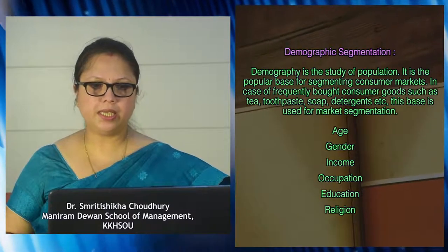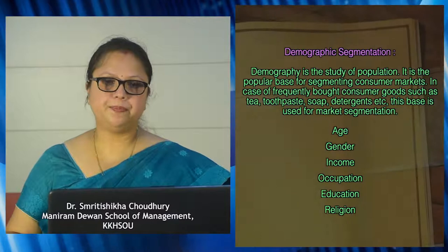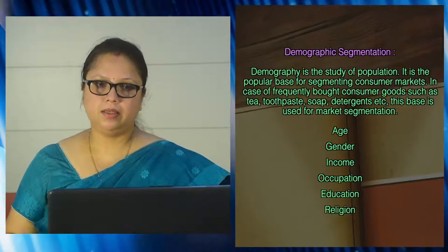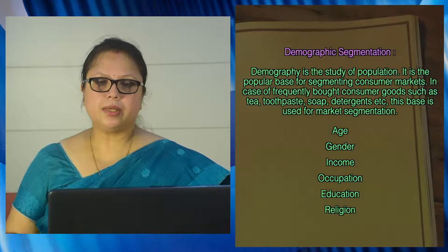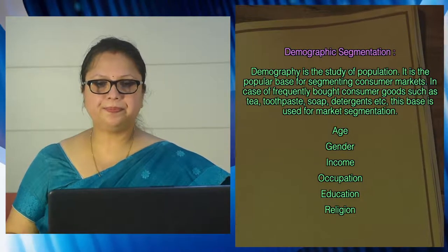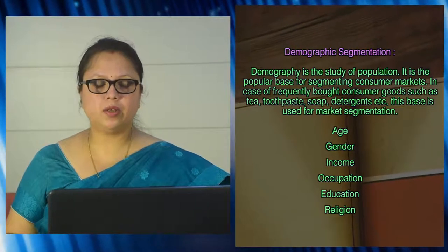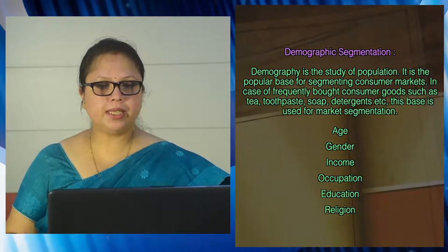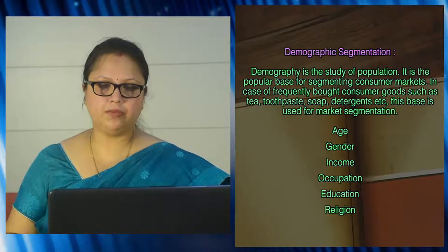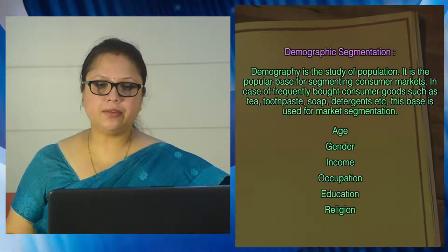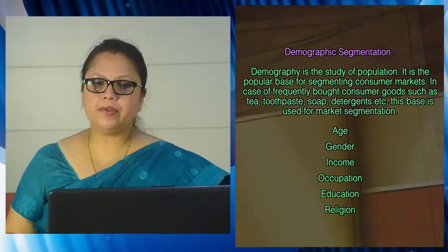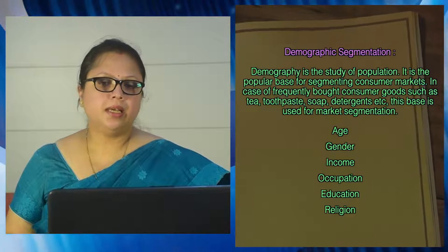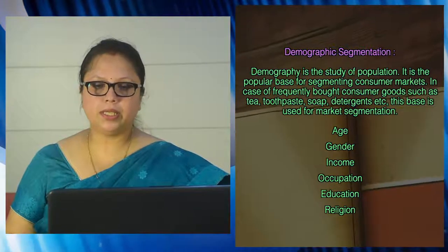Then comes income, which is another demographic factor. People must have money to spend — only then can they make a market. Income provides purchasing ability to customers, so a detailed study of income is very useful for marketers. Low income groups may purchase different things than high income groups. Occupation is another influential demographic factor — people have various occupations such as lawyers, doctors, engineers, and businessmen, and their buying behavior and lifestyle depend on occupation.